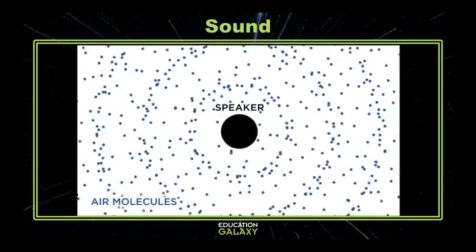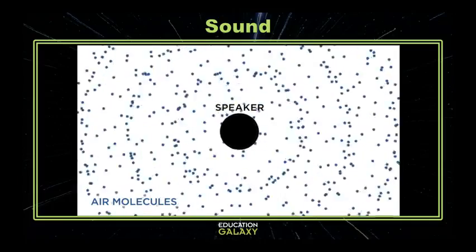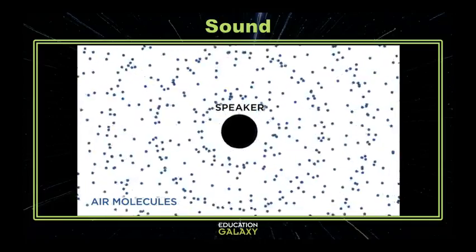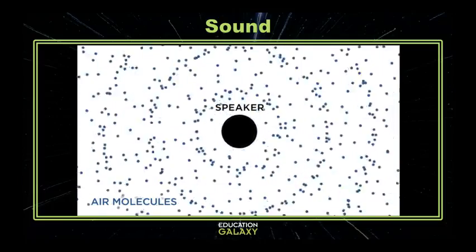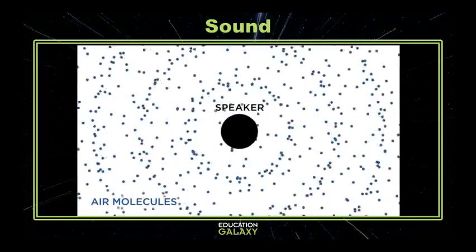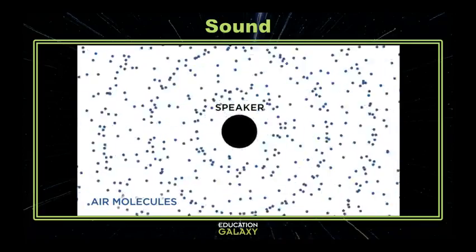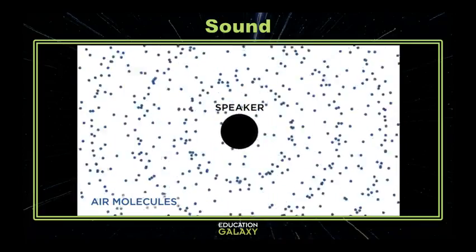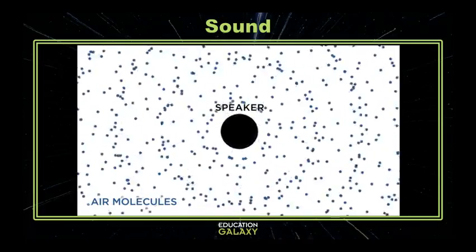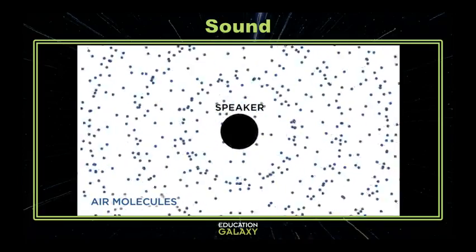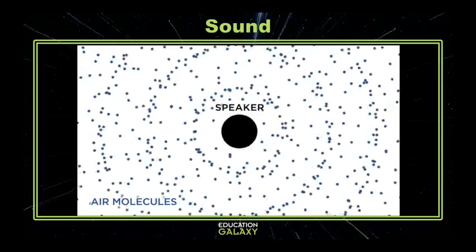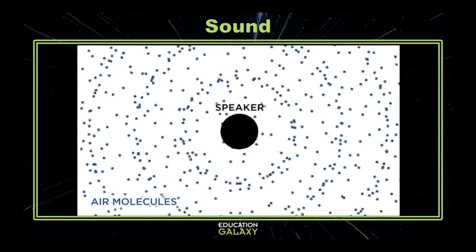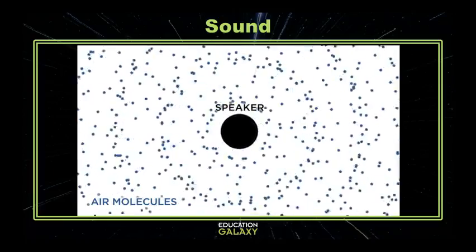Unlike light, sound has to travel through particles. That's why there's no sound in space. You can see here with the music that the vibrating sound travels through the particles in the air. If there aren't enough particles to move the vibrations, you won't hear the sound.